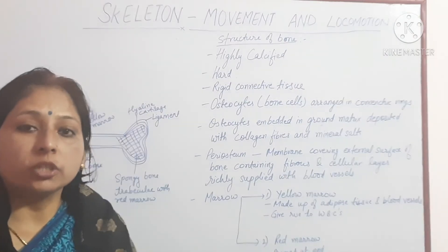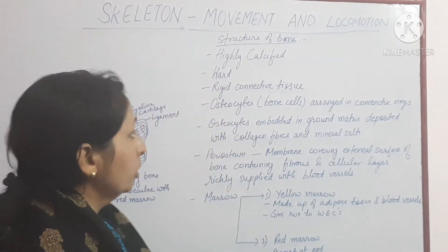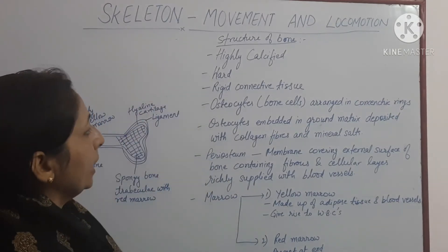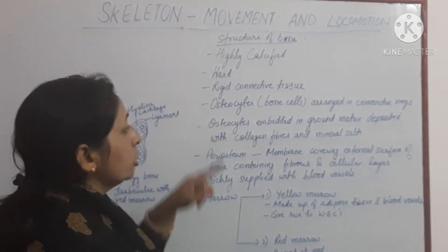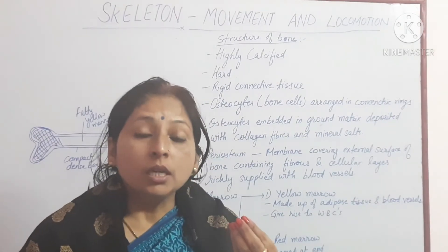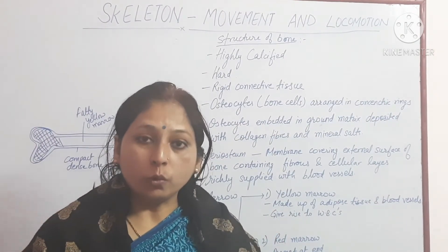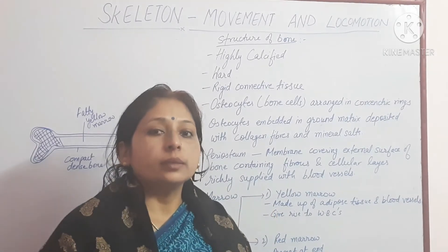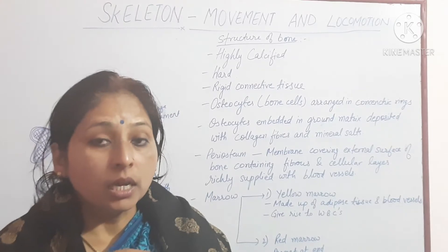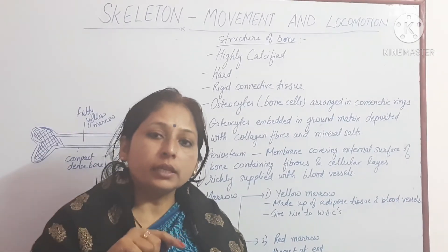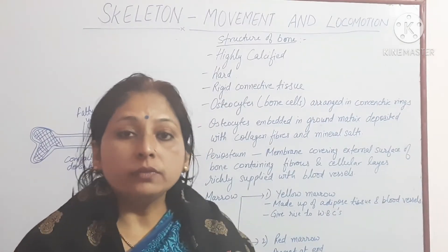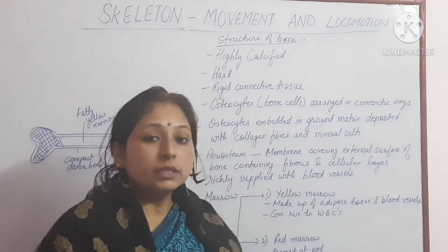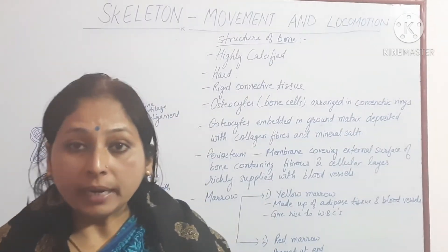Now let's discuss the structure of a typical bone. A bone is a highly calcified, hard structure made up of rigid connective tissue. Osteocytes — the bone cells — are present, arranged in a concentric ring. Osteocytes are embedded in a matrix which is deposited with fibrous collagen fibers and mineral salts.